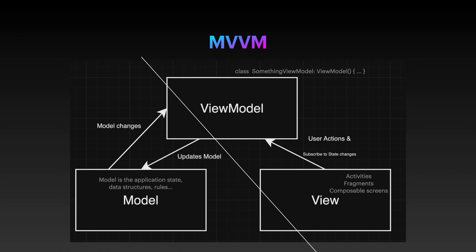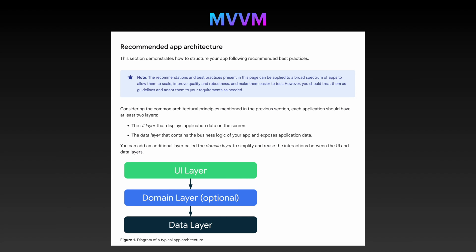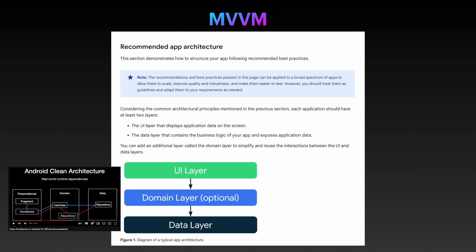Moreover, when researching about Android architecture, we get this official documentation from Google. In a previous video, I analyzed the different architectural approaches in detail — video link is in the description, right below the like button. For now, let's follow Google's architecture. As we can see, this is a different diagram now. Instead of view, we now get presentation layer — this sounds like a much more generic term. Then domain, then data.